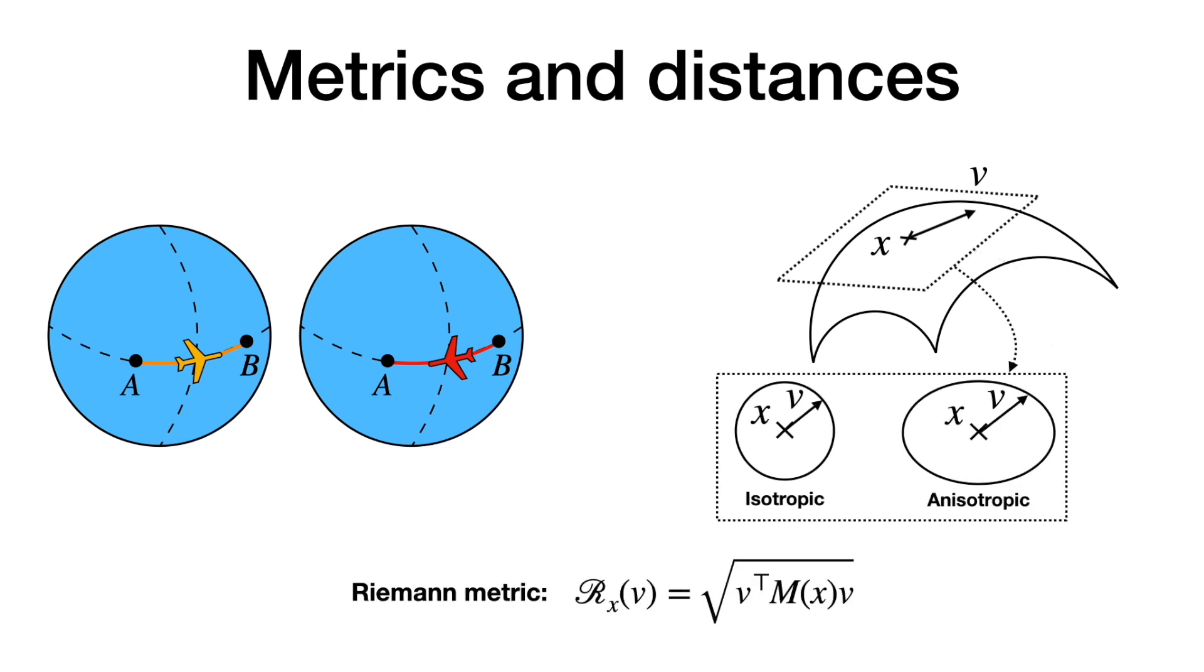However, it is sometimes preferable to favor some directions. The unit ball in the tangent space is no longer a circle and the metric becomes anisotropic. Yet a vector and its opposite share the same distance, preserving the symmetry of the metric.